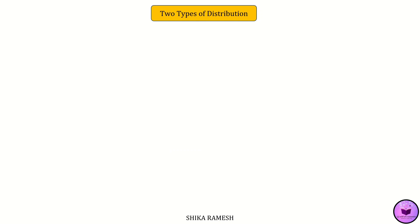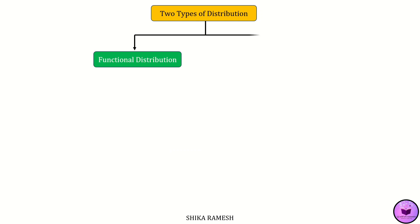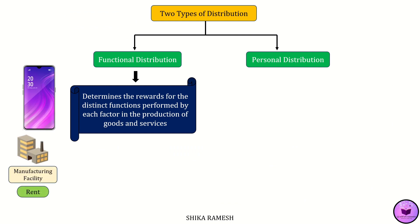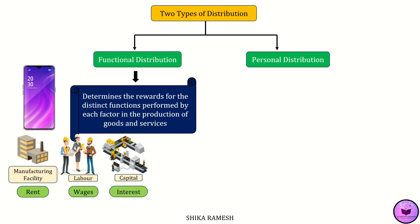There are two main types of distribution: functional distribution and personal distribution. Functional distribution relates to determining the rewards for the distinct functions performed by each factor in the production of goods and services. In our smartphone example, the rent paid for the land, the wages received by the workers, and the interest earned on the capital are all examples of functional distribution.